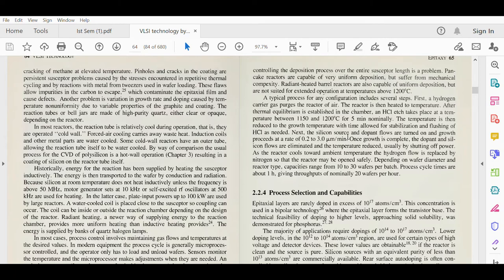And growth proceeds at a rate of 0.2 to 5.0 micrometers per minute. All the things we discussed in the previous chapter about the reactor, how the temperature varies, how HCl gas is inserted or taken as outlet, what is the growth rate—all these things are discussed over here. Once growth is complete, the dopant and silicon flows are eliminated and the temperature is reduced, usually by shutting off the power.